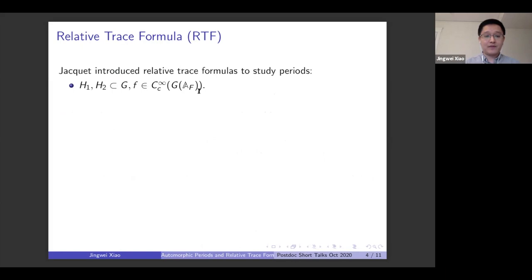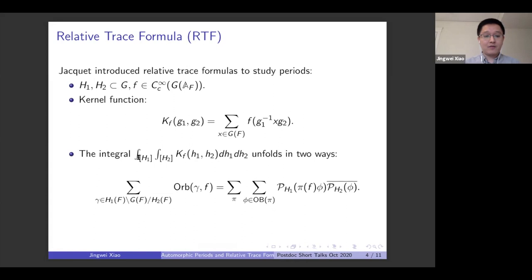The setup is you get some group G and two subgroups H₁ and H₂. And with a test function F, a compactly supported function on the adelic point of G. And I want to consider the kernel function K_F(g₁, g₂) defined by F. This is the summation over the rational points.